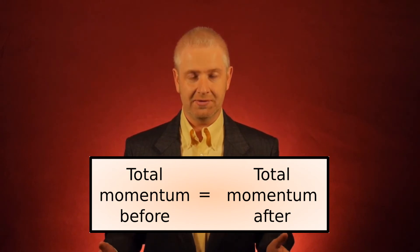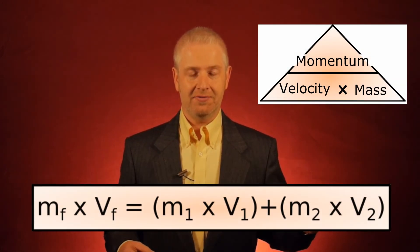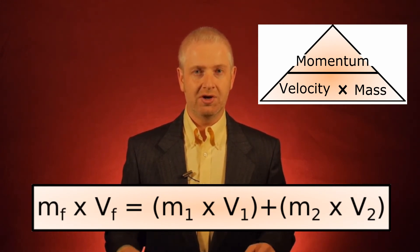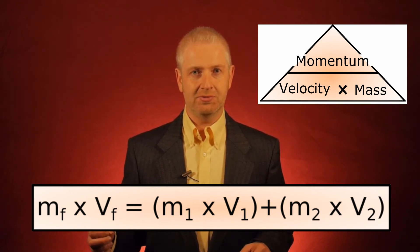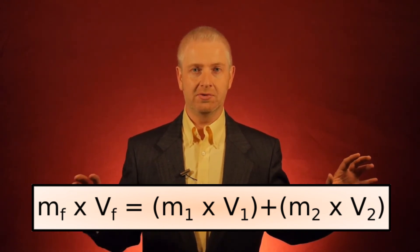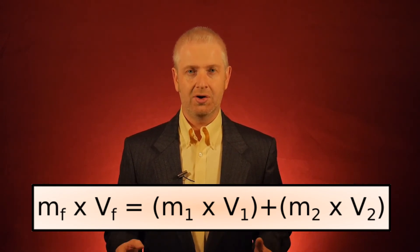So what does that mean? Well, as they stick together, we have Mf times Vf, final mass times the final velocity will be equal to M1 times V1 plus M2 times V2. So the final momentum will be equal to the individual initial momentums added together.